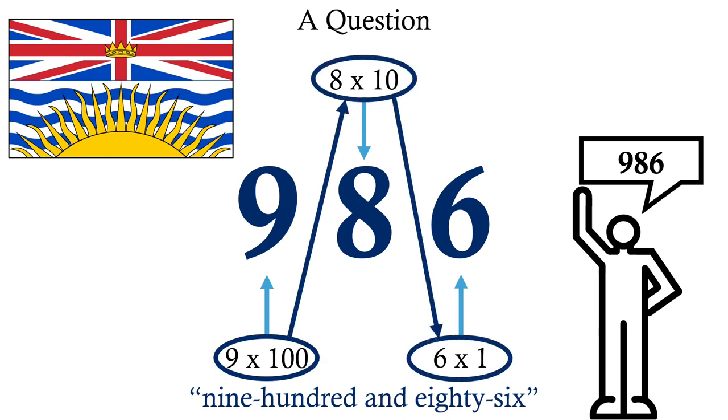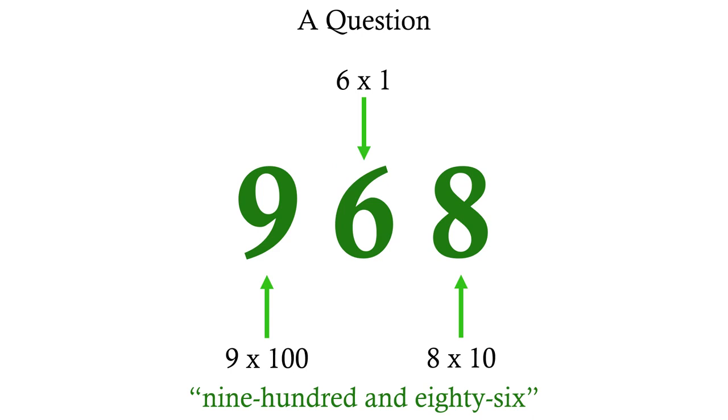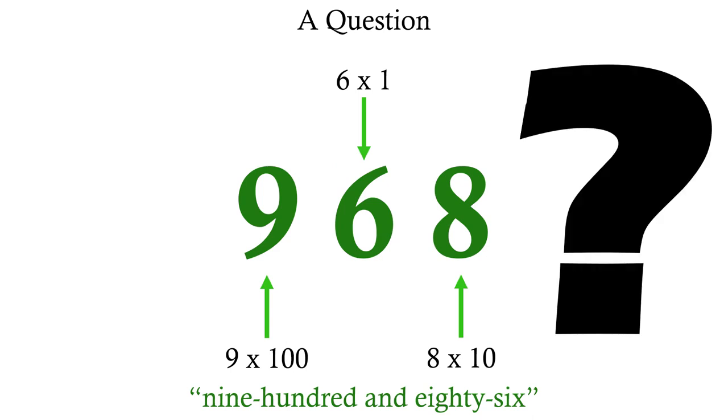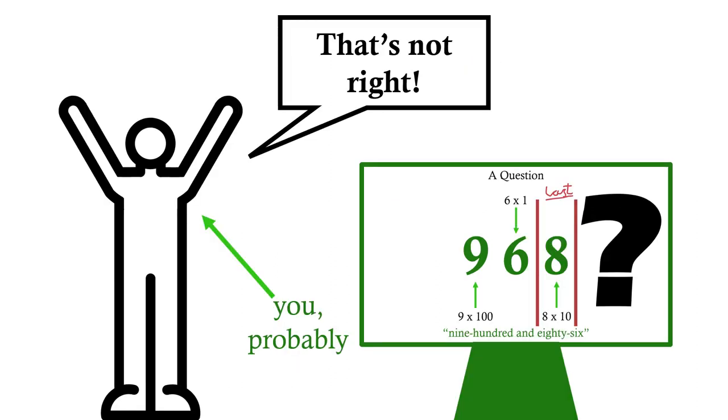But what if we represented the number like this instead? Why not? I mean, if we all just decide together that this tens column goes last, then what's the problem?